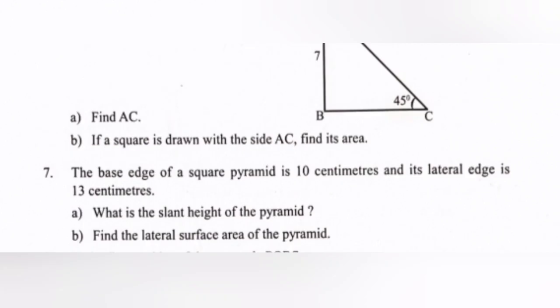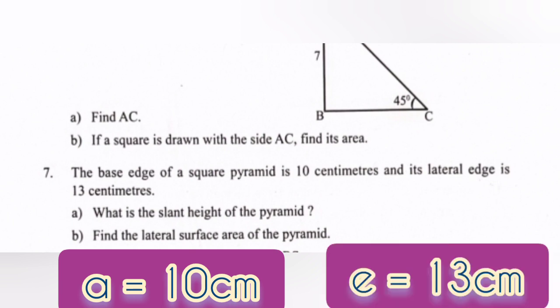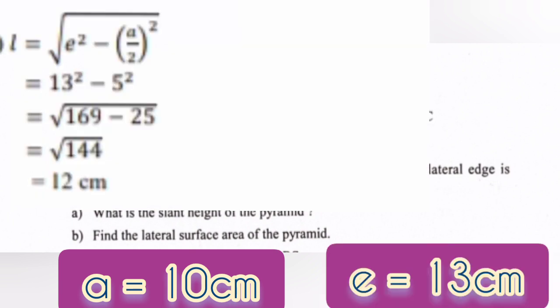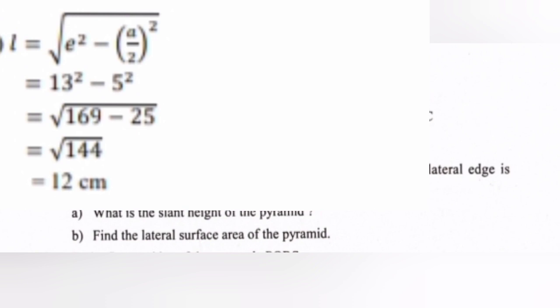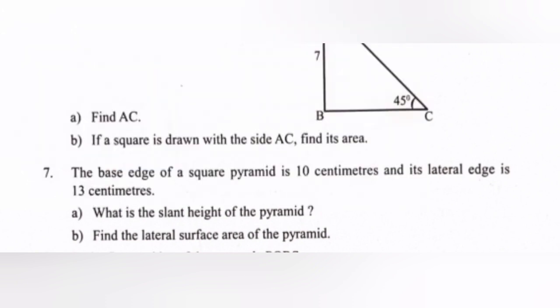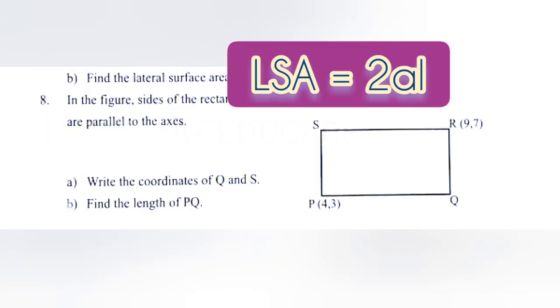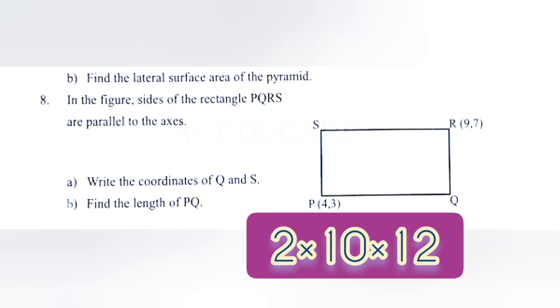Question 7: The base edge of a square pyramid is 10 cm and its lateral edge is 13 cm. Part a: Find the slant height. Solution: l = root of (e squared minus (a/2) squared) = root of (13 squared minus 5 squared) = root of (169 minus 25) = root 144 = 12 cm. Part b: Lateral surface area equals 2al = 2 times 10 times 12 = 240 centimeter square.